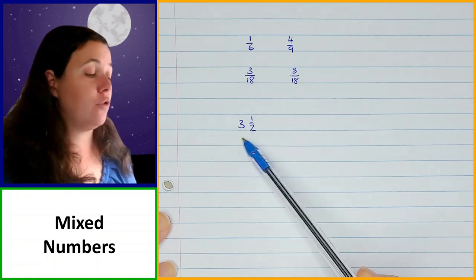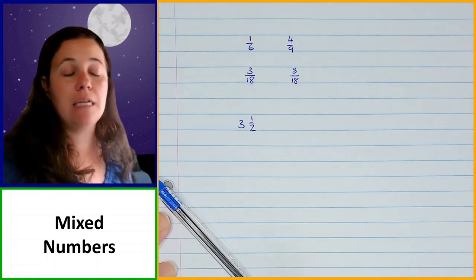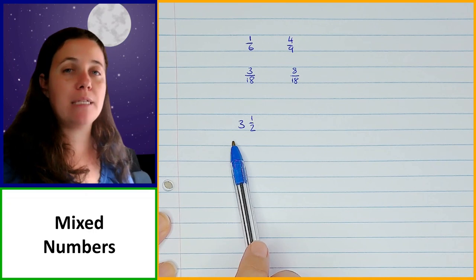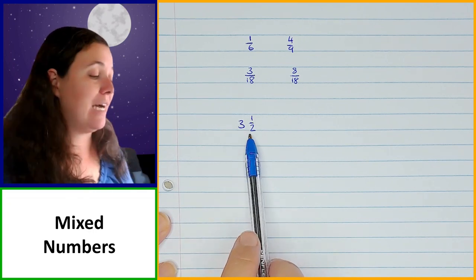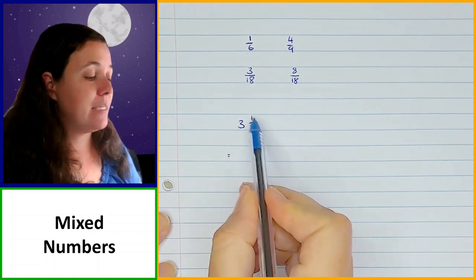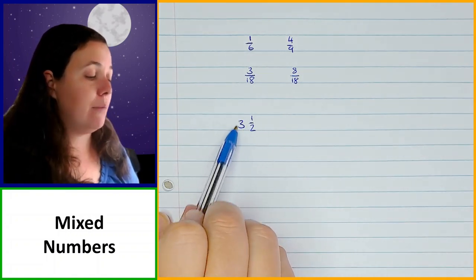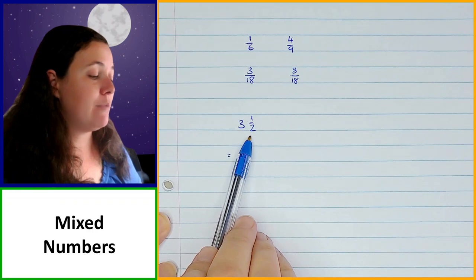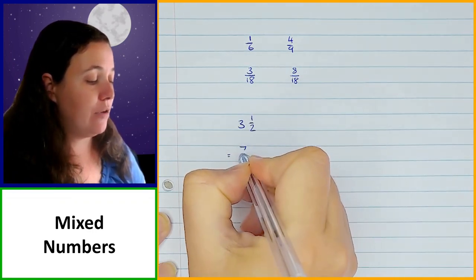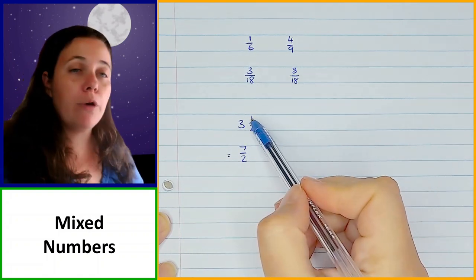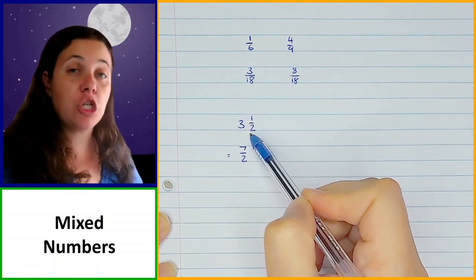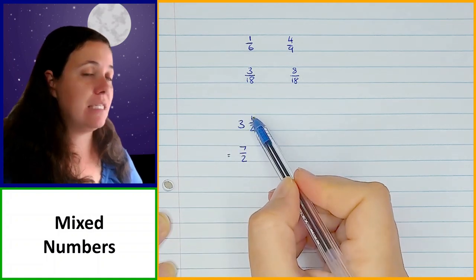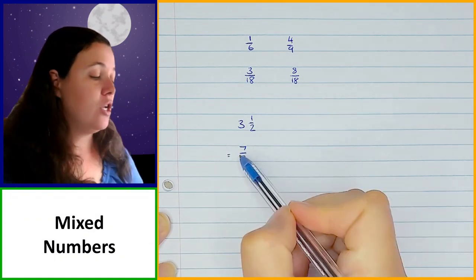It's not essential — you can also solve it keeping all numbers as mixed numbers, but it does make it easier. You're less likely to have problems or mistakes if you convert them all to improper fractions first. In order to convert a mixed number to an improper fraction, we need to take the whole number and multiply it by the denominator, and then add the numerator. So 3 times 2 is 6, plus 1 gives me 7, and that's going to be 7 over 2.